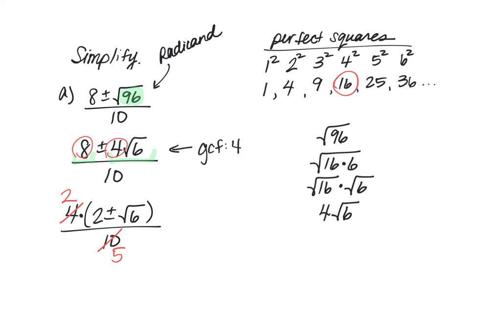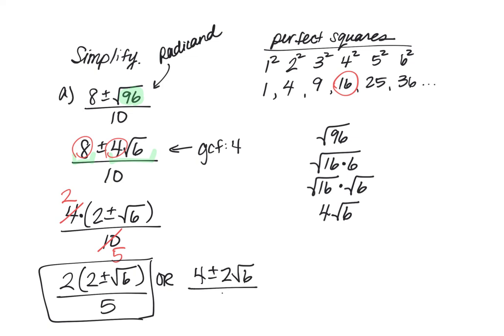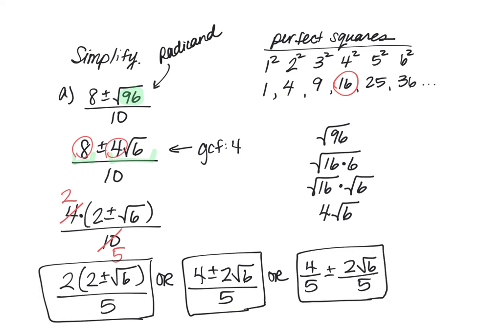So you could leave your answer either as 2 times the quantity 2 plus or minus the square root of 6 over 5. This would certainly be acceptable. Or you could distribute the 2 in the numerator and go back to 4 plus or minus 2 square root of 6, all divided by 5. Completely fine. Or if you wanted to break this into two separate terms, you could write 4 fifths plus or minus 2 square root of 6 over 5. That would certainly be acceptable as well.